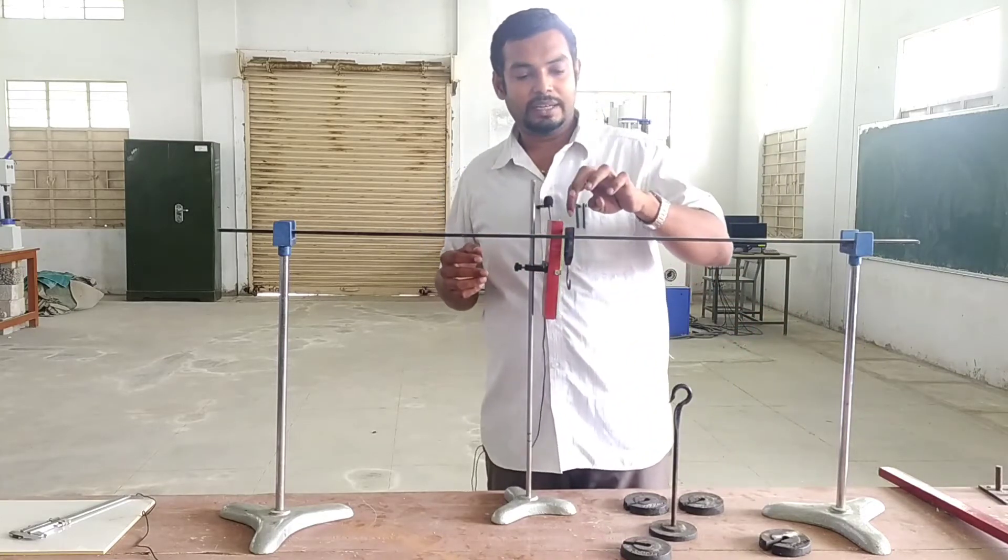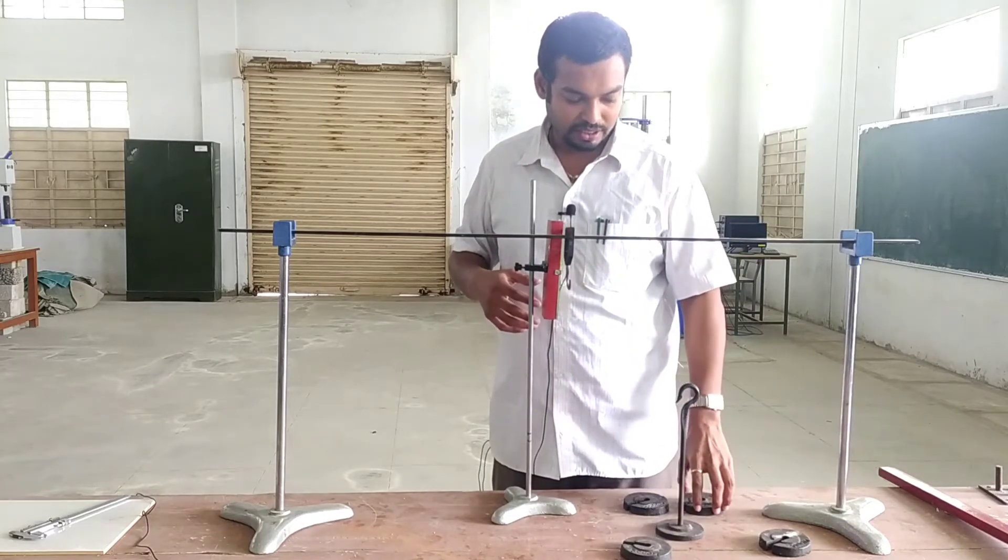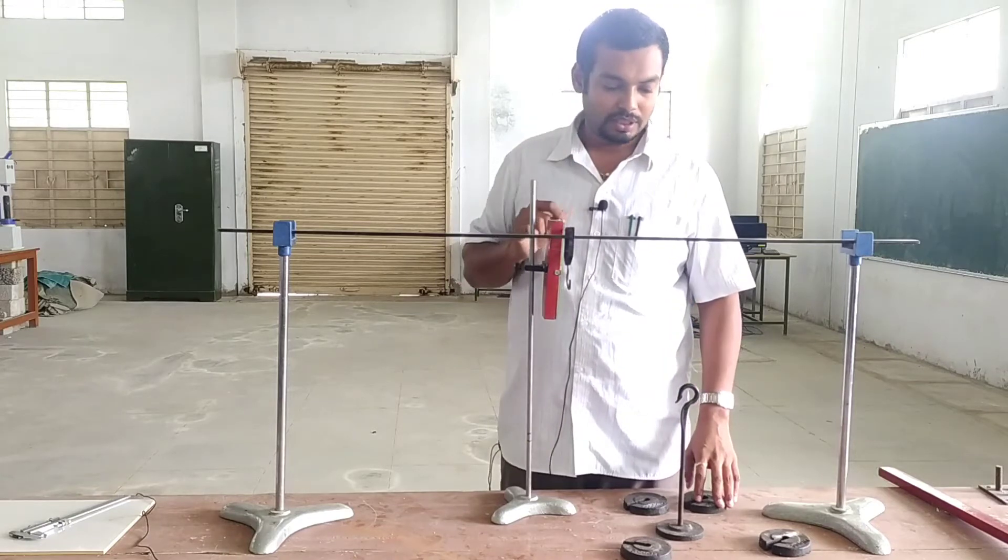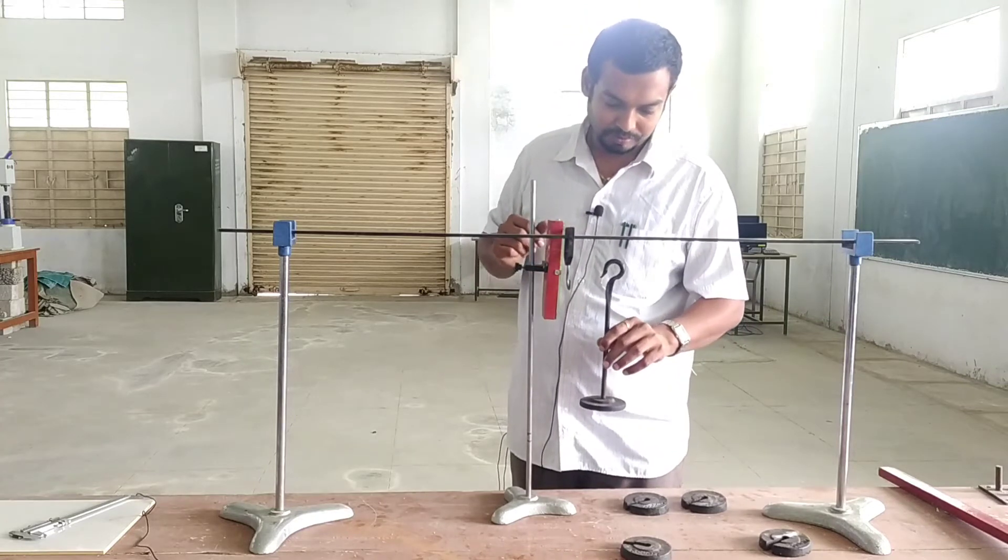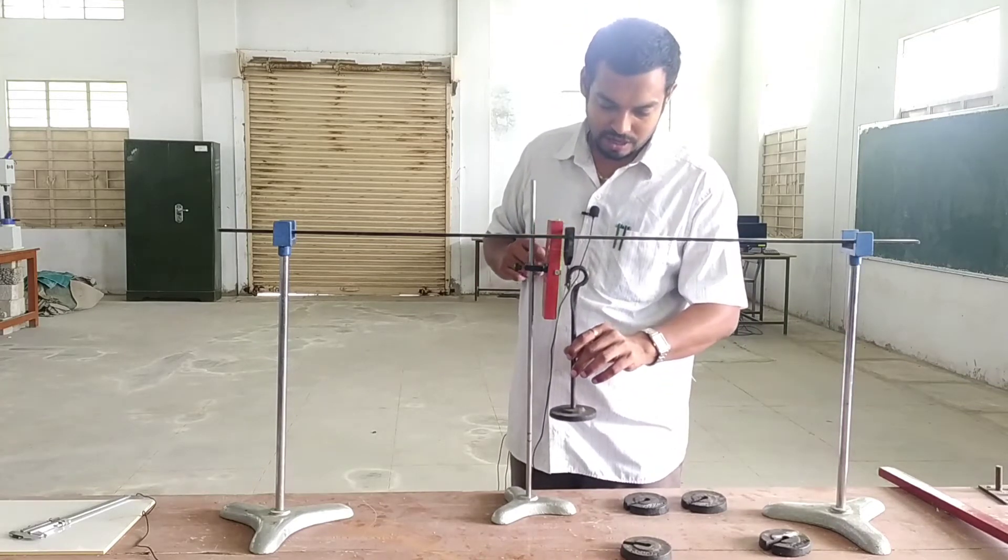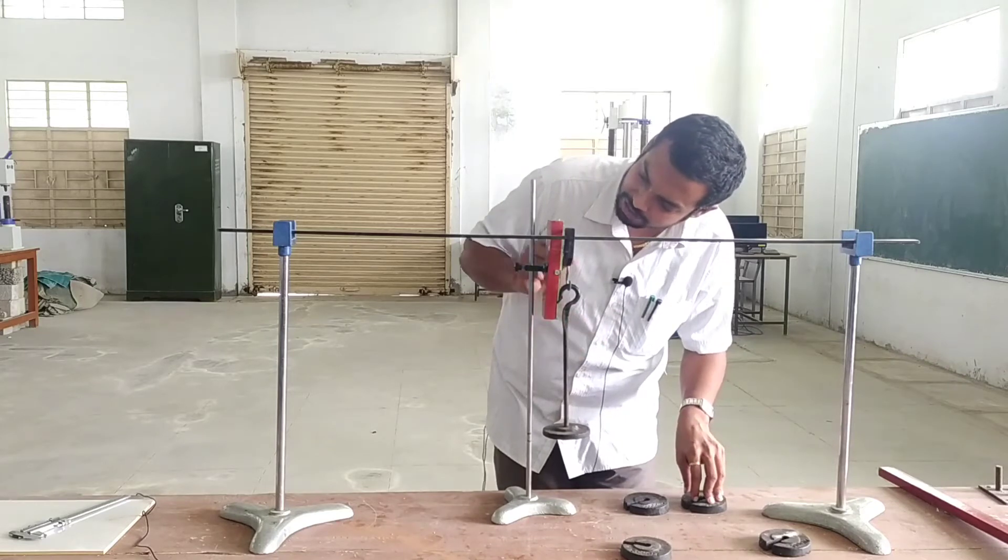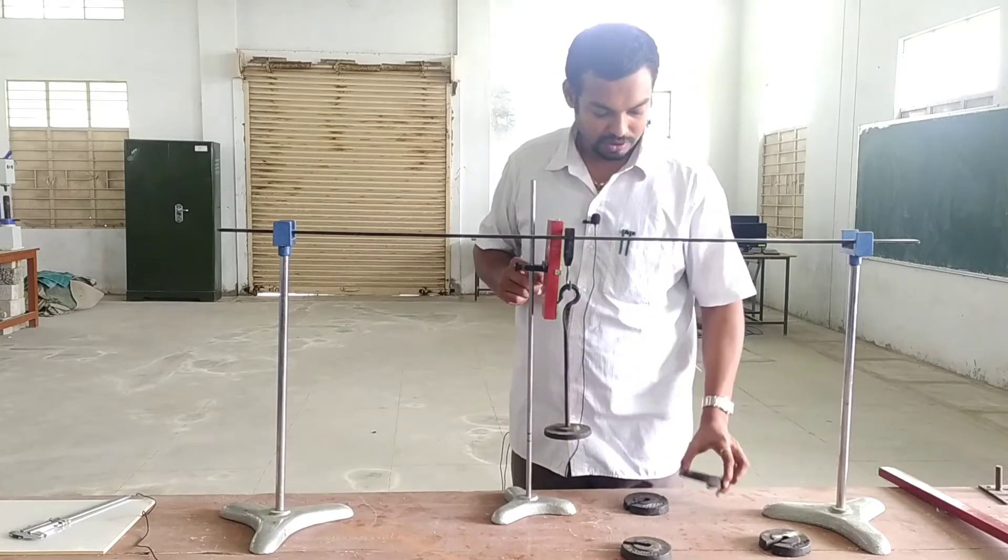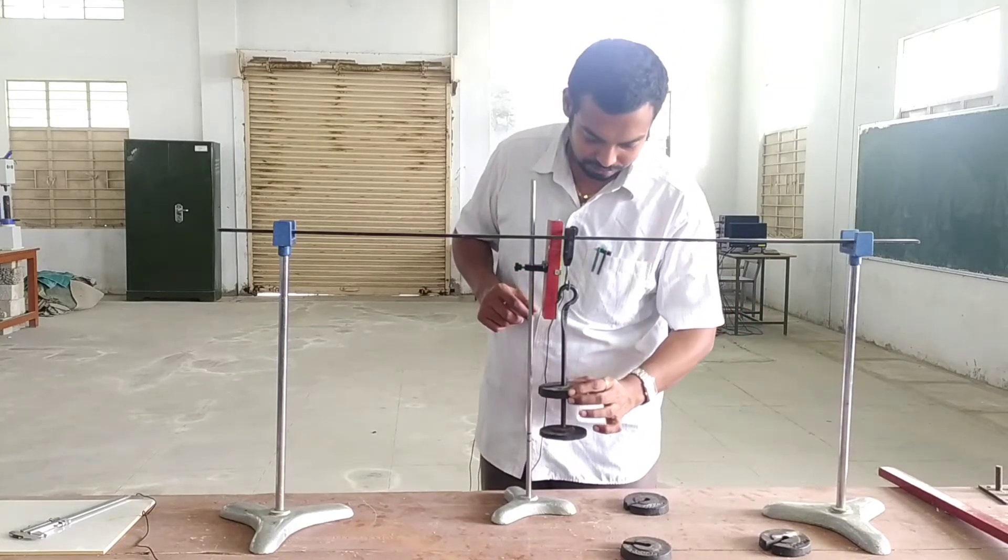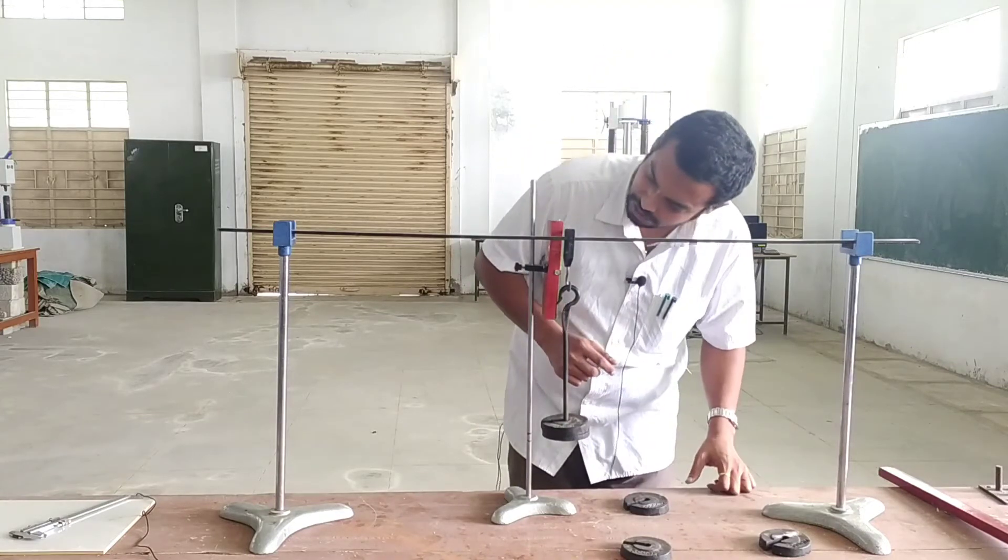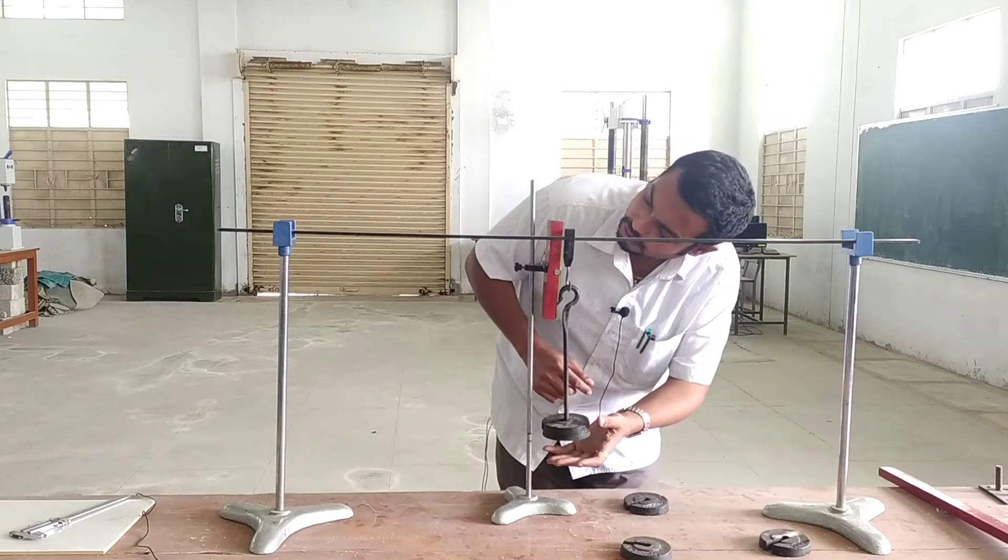And the other method is the dial gauge. Dial gauge place, point load. This is the deflection. First central point load 500 grams apply. This is the deflection 2.5.